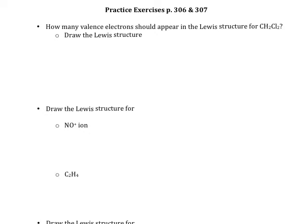These are practice exercises from pages 306 and 307 in the textbook. We're going to practice drawing Lewis structures. It may be helpful to have a periodic table with you, because when we draw Lewis structures, we figure out the number of valence electrons based on the group number that the atom is in. In order to figure out valence electrons, you need to know the group number in the periodic table.